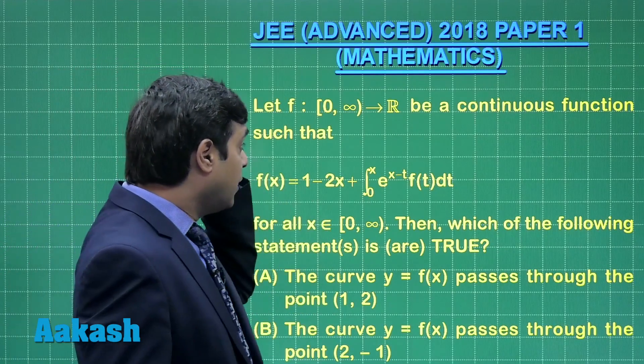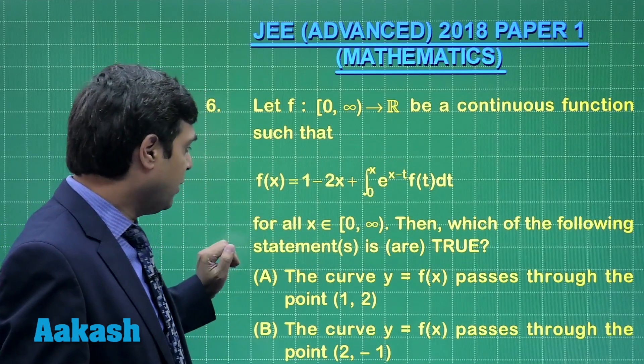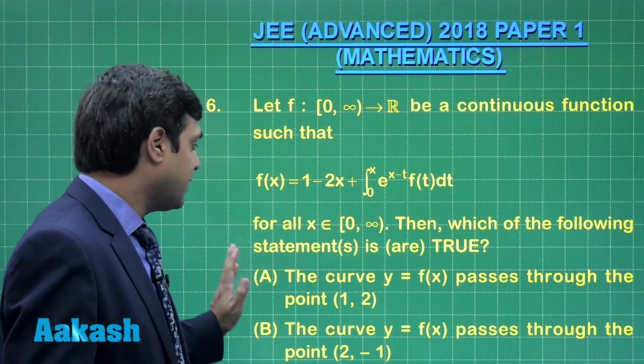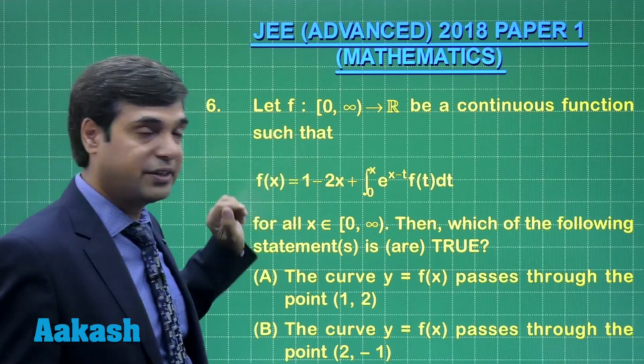Let us take question number 6. Let f be a continuous function satisfying this equation. Then for all x, which of the following statements are true? Four options are given. First, we have to deduce this function.